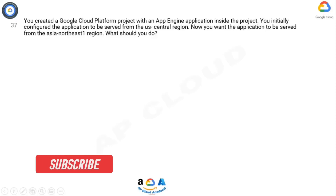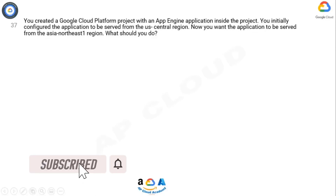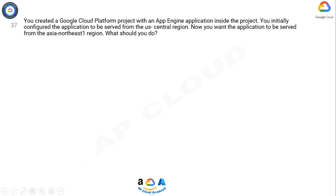Question. You created a Google Cloud Platform project with an App Engine application inside the project. You initially configured the application to be served from the US Central region. Now you want the application to be served from the Asia Northeast 1 region. What should you do?